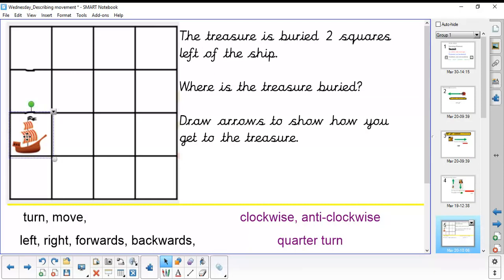Well, if the boat was to move forwards two squares, it would move in this direction. If the boat was to move to the right, it would turn and move in that direction. So where do you think the treasure is now?